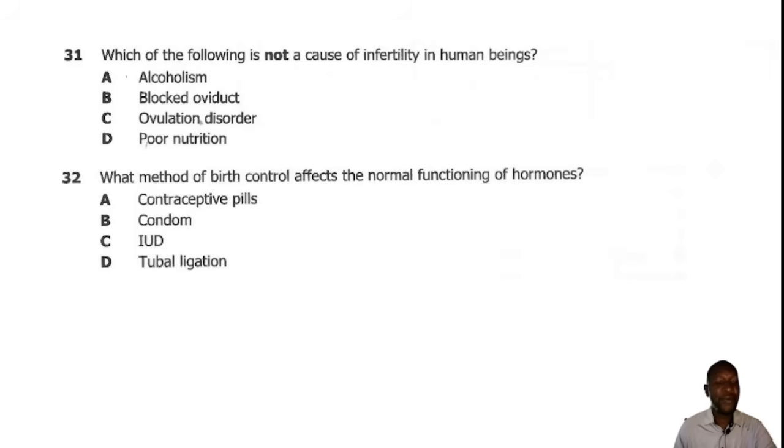Question 31. Which of the following is not a cause of infertility in human beings? In human beings, infertility cannot be caused by poor nutrition. So the correct answer is D.